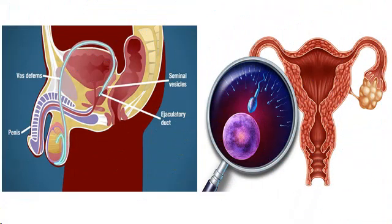The male and female reproductive systems are made up of external and internal organs for reproduction. The morphological and physiological structures of the male reproductive system are different from the female reproductive system. The external and internal parts differ in size and shape, as well as their functions. Though the parts and functions of the reproductive system are different in some aspects, they are coordinated.